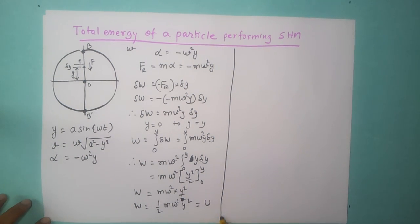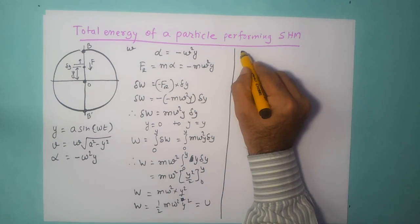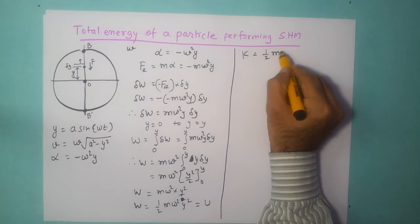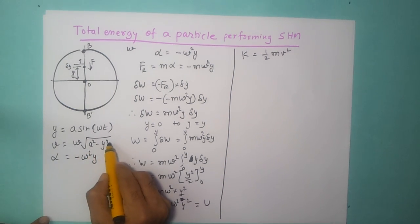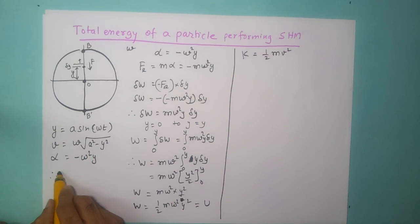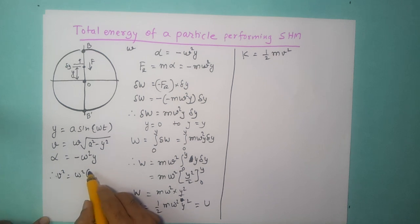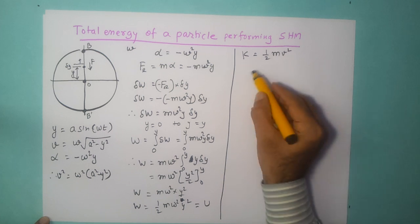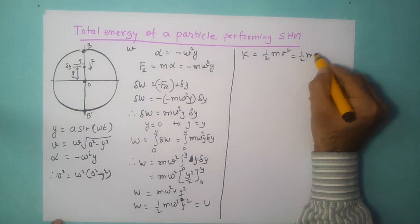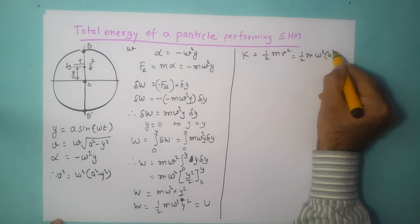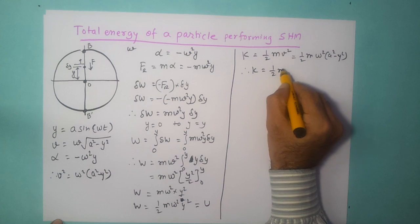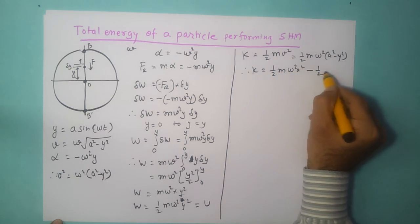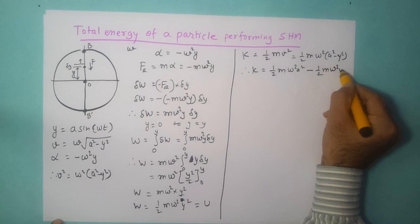Now let us focus on the kinetic energy k. Kinetic energy is given by half m v squared. Since v equals omega times square root of a squared minus y squared, v squared will be omega squared into a squared minus y squared. Therefore kinetic energy k equals half m omega squared times (a squared minus y squared), which expands to half m omega squared a squared minus half m omega squared y squared.